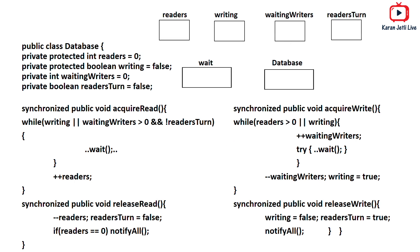Here we have the algorithm for the readers-writers problem with some variables. In my database class I have four variables: 'readers' initialized to zero, a boolean variable 'writing' initially false, 'waiting_writers' initialized to zero, and 'readers_turn' initially false.